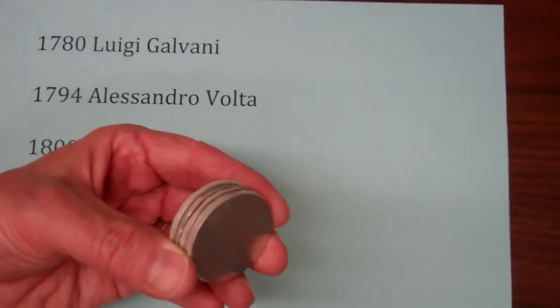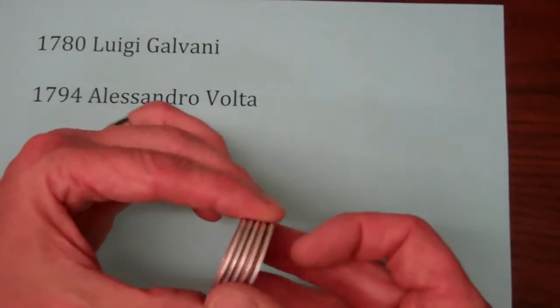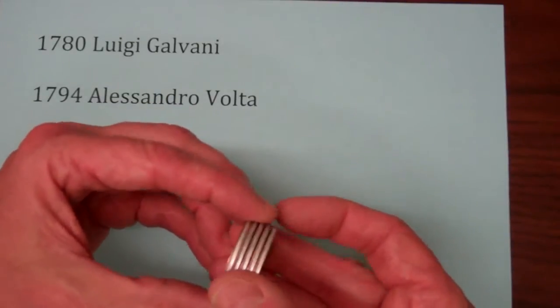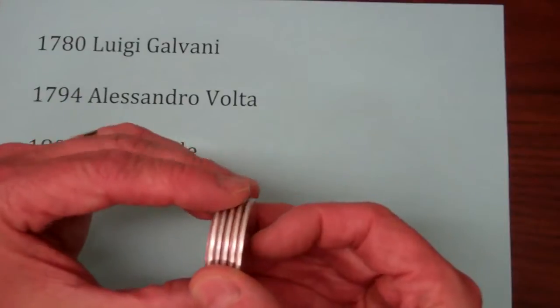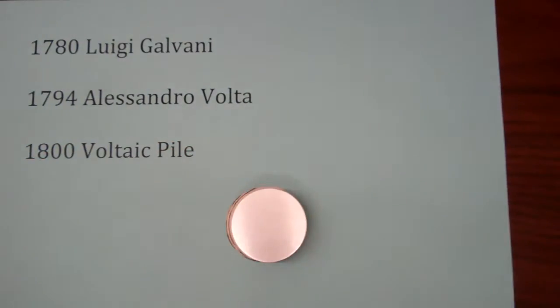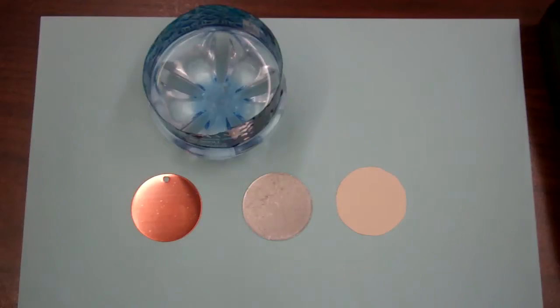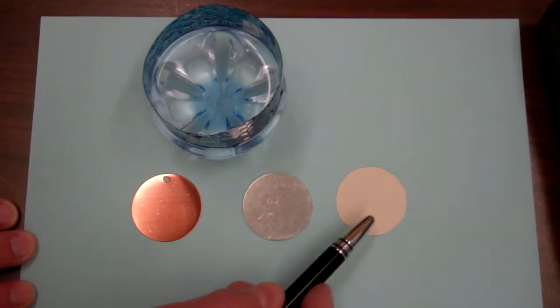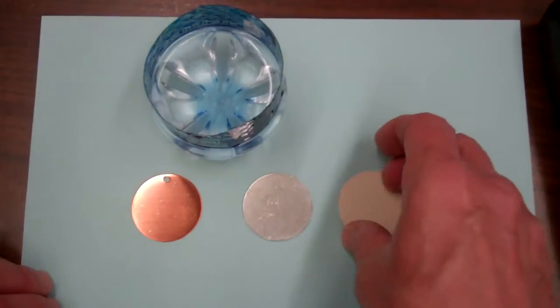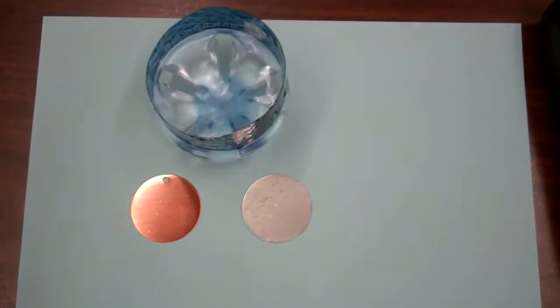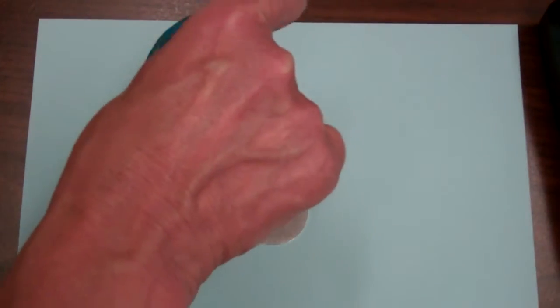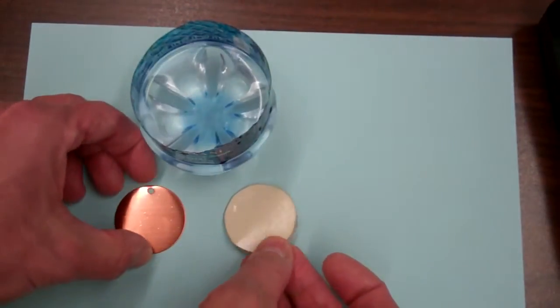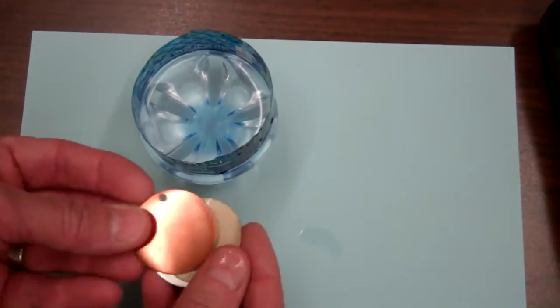So essentially he had the first battery. So what we're going to do now is demonstrate how to build one of these Voltaic Piles, demonstrate its operation, and then explain its operation. I'm actually going to use aluminum instead of zinc. So I have a disk of aluminum and a disk of copper and a piece of paper. And I've prepared a solution of salt water here. So I'm going to soak the paper in the salt water and place it between the aluminum and the copper.